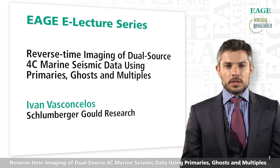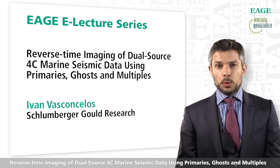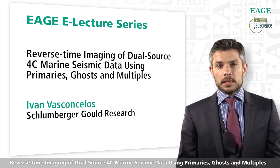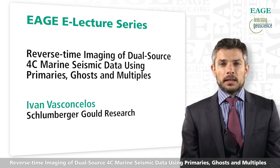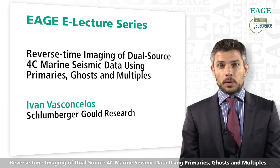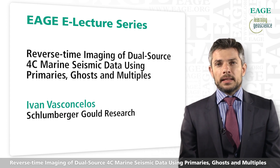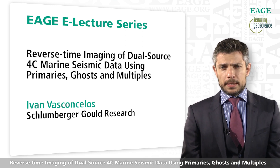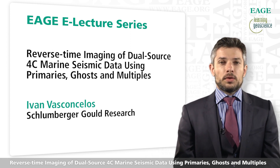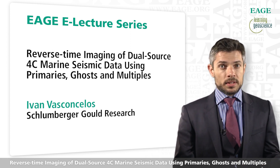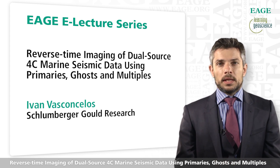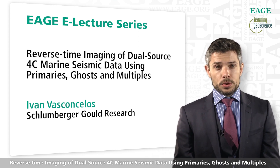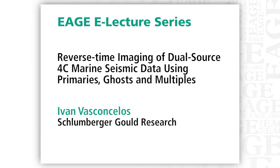Reverse time migration is one of the world's leading tools in imaging wave field data in complex environments. We'll look at data composed of pressure and particle velocity or acceleration, and see how we can modify reverse time migration schemes to account for the vector nature of the data. If we can account for the vector nature on both the source and receiver side, we can accommodate not only primaries as in conventional migration, but also ghosts and multiples, depending on how much we know about the model.